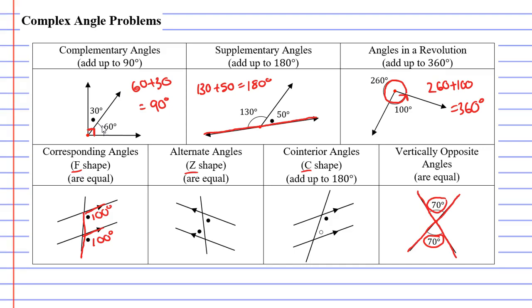Next we have alternate angles which make a Z shape. When I draw around the angles it makes a Z shape, which means they are equal as well. So if this angle on the right was 80 degrees the angle on the left would also be 80 degrees.